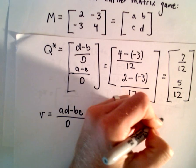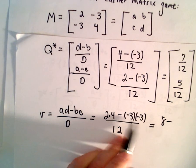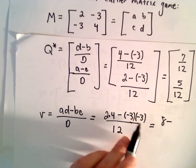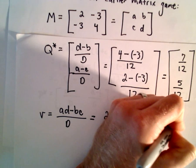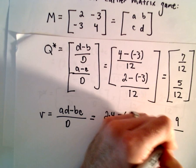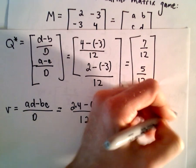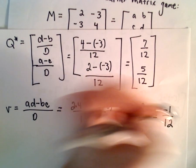And if we compute that, that's going to be 8 minus, let's see, negative 3 times negative 3 is going to give us positive 9 over 12. And if we reduce that, that's going to give us negative 1 over 12.